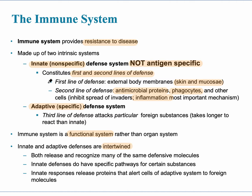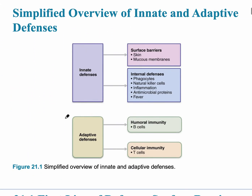Even though the innate and adaptive systems are separate, they are intertwined with cross-communication between them. If the innate defense system is not enough, it signals the adaptive defense system for help. In a simplified overview: the innate is nonspecific, with a first line of surface barriers and a second line of internal defenses. Bacteria first encounter the surface, and if they get through, they face the internal defenses.